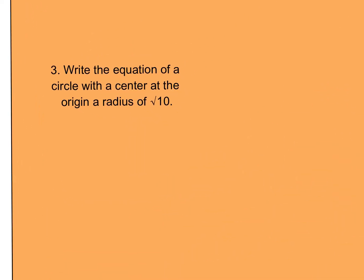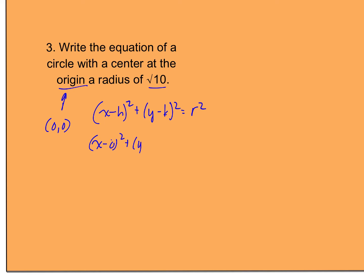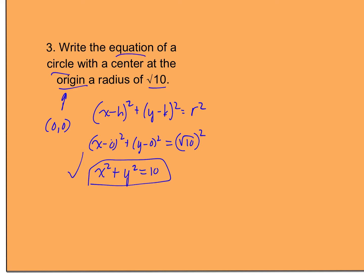This one is actually simpler than you think. The equation of a circle with a center at the origin with a radius of square root of 10: the origin is (0, 0), so the equation is x minus 0 squared plus y minus 0 squared equals square root of 10 squared. Simplifying: x minus 0 is just x, y minus 0 is just y, and square root of 10 squared is just 10. So the answer is x squared plus y squared equals 10.